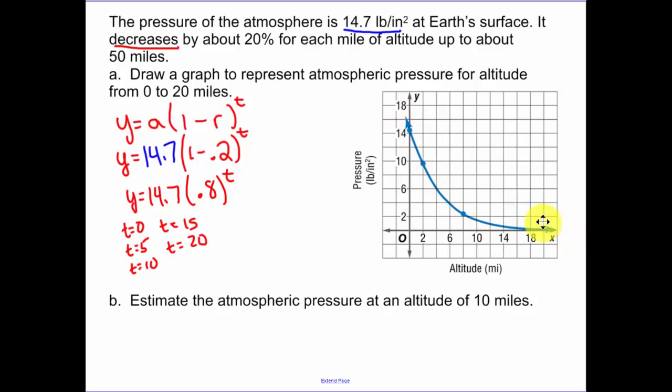As x is getting bigger and bigger, our y's are getting smaller. It's never going to go below 0. Our pressure is never going to go below 0. Now, estimate the atmospheric pressure at an altitude of 10 miles. That's when t equals 10. So all I have to do is plug in 10 for t. And when I plug in 10 for t, I get 1.58 pounds per square inch. So 10 miles above our Earth's surface, this is how small our atmospheric pressure is.